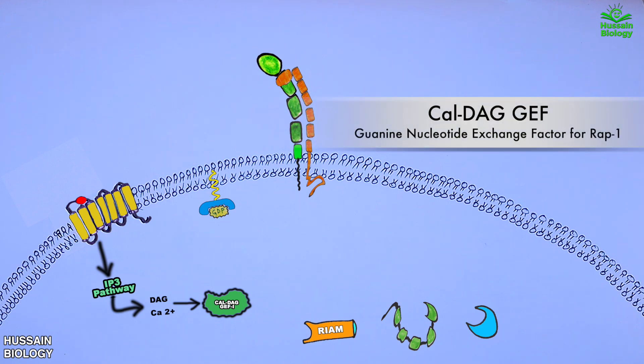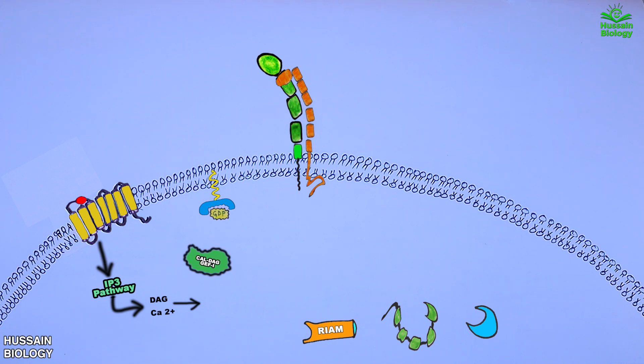The GEF1 is the guanine nucleotide exchange factor, so now we have activated GEF1 protein. It comes in and replaces the GDP of RAP1 protein with GTP as shown in the animation. By this way the RAP1 protein gets active.